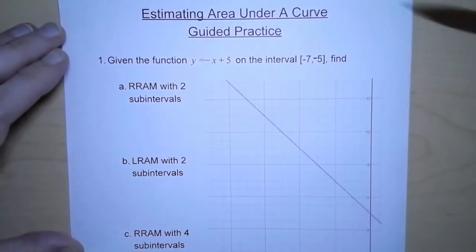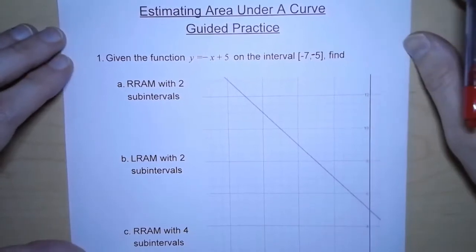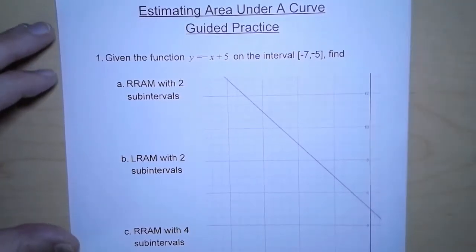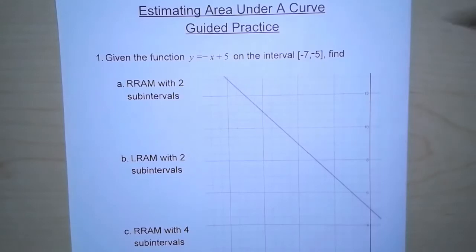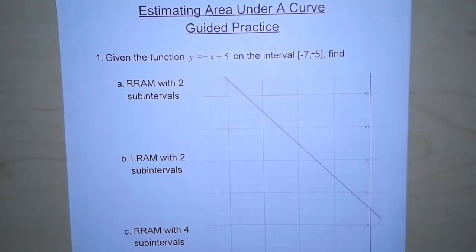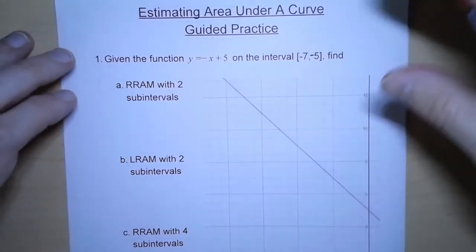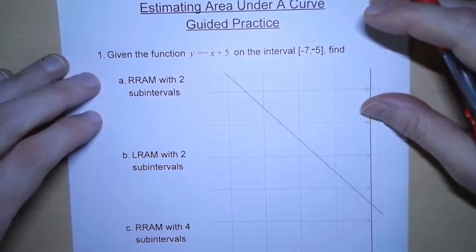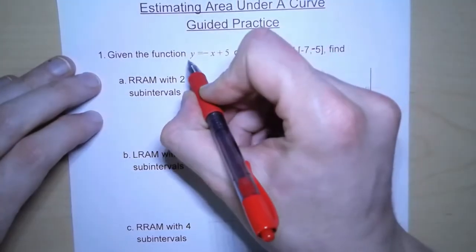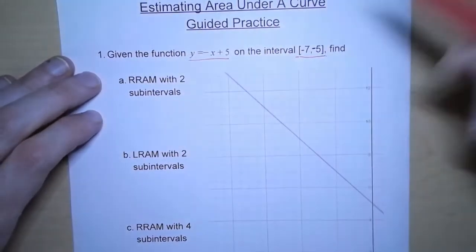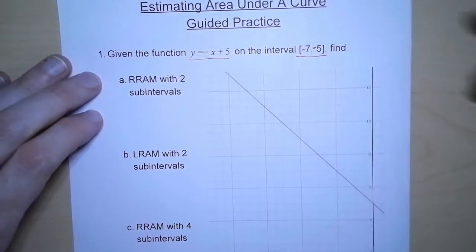So what we're doing is we're estimating the area under a curve. We're going to start with this first example with a line. Now with a line, we could actually get a little more accurate, but it gives us a good starting point for when we actually start to deal with curves. And so what we have is a function and an interval — in this case, from negative 7 to negative 5.